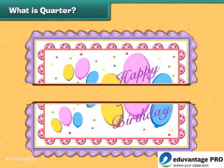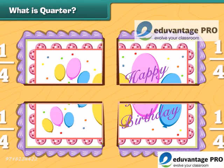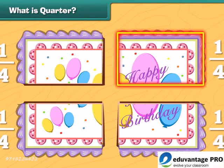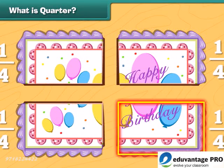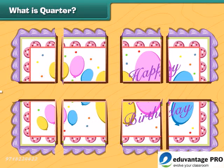Now let us cut the cake into four equal pieces. Each piece represents one fourth of the whole cake. So the fraction is one fourth — it is also called a quarter. This is one quarter of the cake, this is two quarters, this is three quarters, and this is four quarters. Four divided by four is one, so four quarters make one whole cake. You can also divide the cake into more number of pieces.